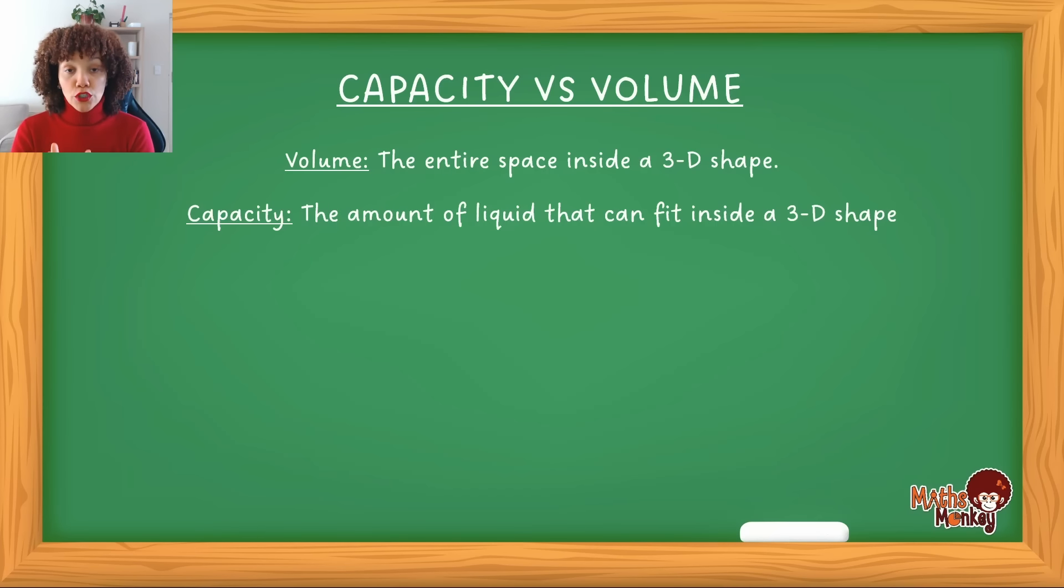Then we moved on to area, which is the entire space inside of a two-dimensional shape. And then surface area is the area added up of all of the surfaces of a three-dimensional shape. And then volume is now the space inside a three-dimensional shape.